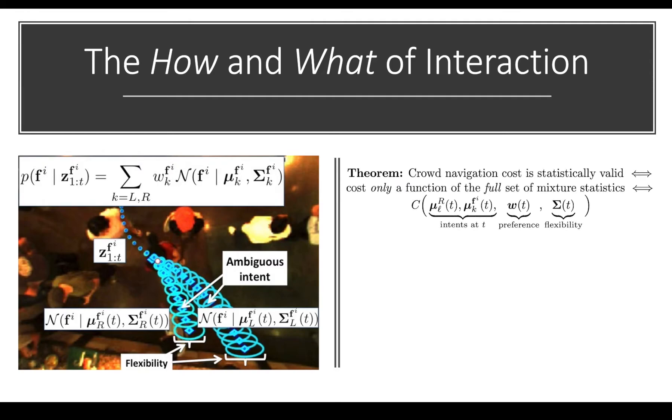And so given those agent models, we have the following theorem. Crowd navigation cost is statistically valid if and only if the cost is only a function of the full set of mixture statistics. So effectively, what this says is that the parameter gamma in the interaction function psi has to be the full set of mixture statistics if we want it to be statistically valid.